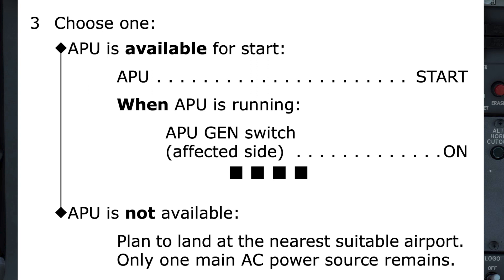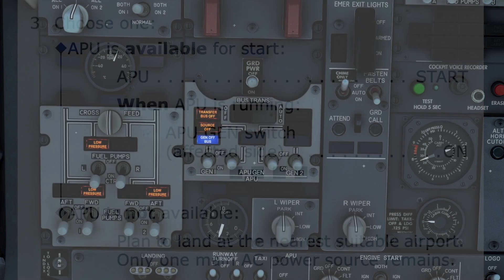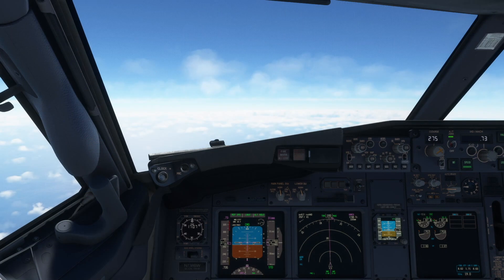Had the APU not been available, the checklist would have directed us to land at the nearest suitable airport, as only one main AC power source would have remained. Let's take a look at the differences if transfer bus number 2 was lost, along with an electrical source on that side.